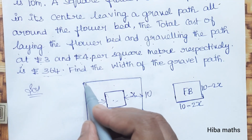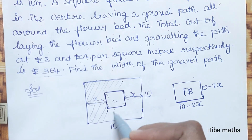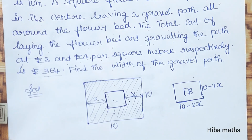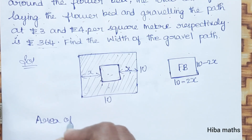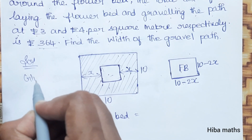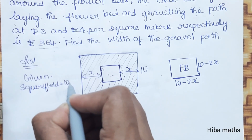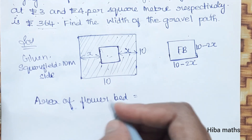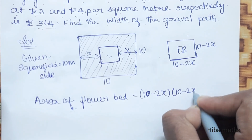The area of the gravel path equals the area of the square field minus the area of the flower bed. The side of the flower bed is equal to 10 minus 2x. So the area of the flower bed equals the square of that side.